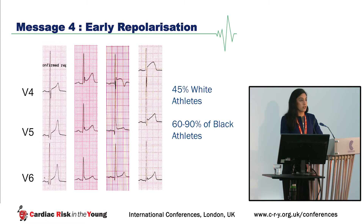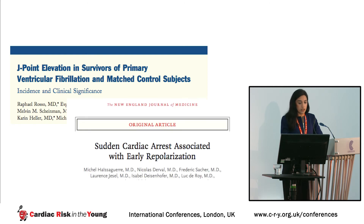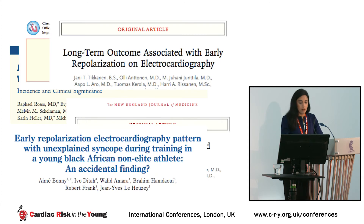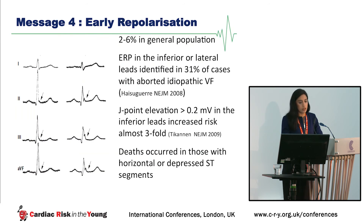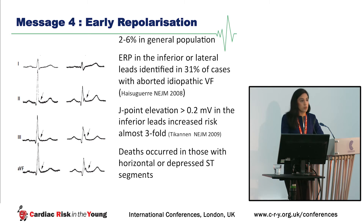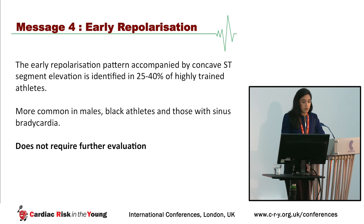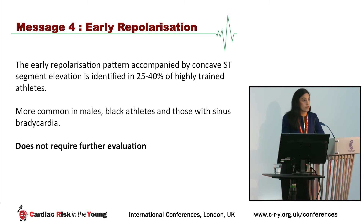Some studies in survivors of cardiac arrest show an association between early repolarization and increased risk of ventricular fibrillation. Haïssaguerre demonstrated early repolarization in the inferior or lateral leads in 31% of cases with aborted idiopathic VF. Tikkanen showed that J-point elevation with horizontal or descending ST segments in the inferior leads was associated with increased arrhythmic risk, whereas an up-sloping ST segment was associated with a benign prognosis. Message four: early repolarization with concave ST segment is identified in highly trained athletes and does not warrant further evaluation in the absence of symptoms or family history.